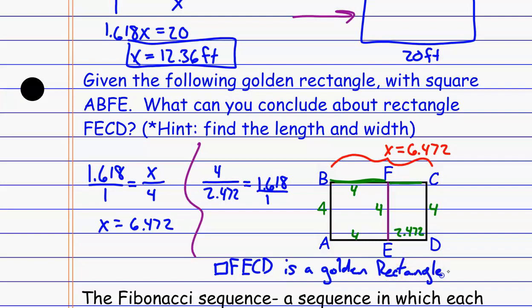The neat thing about this is that if you take any golden rectangle and section off a square from the inside, the rectangle that remains will be another golden rectangle. And I could keep doing that — if I section off a square in there, the little rectangle left is also a golden rectangle. If I section off another square, that rectangle left is a golden rectangle too. You can keep splitting it into more and more squares and golden rectangles — it's a unique recursive relationship.